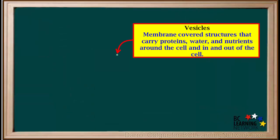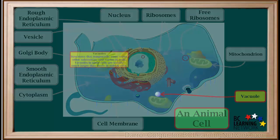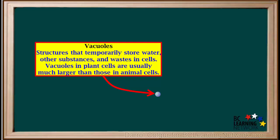We can define vesicles as membrane-covered structures that carry proteins, water, and nutrients around the cell, and even in and out of the cell. The next organelle we'll look at are vacuoles. Vacuoles are structures that can be found floating around anywhere in the cytoplasm. Vacuoles are structures that temporarily store water, other substances, and wastes in cells.